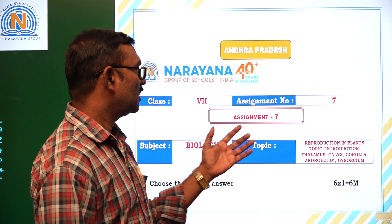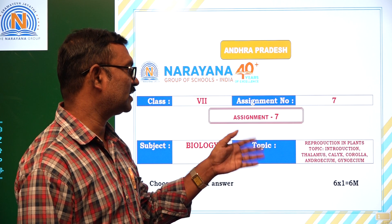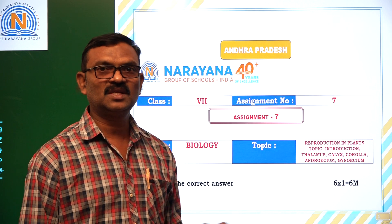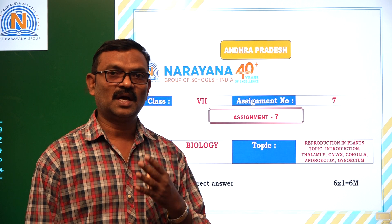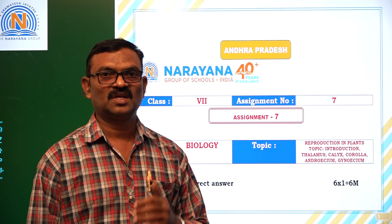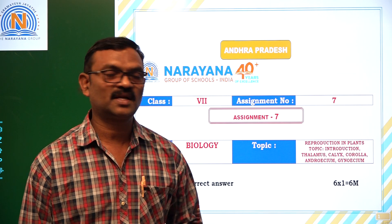The topics are Introduction, Thalamus, Calyx, Corolla, Androecium, and Gynoecium. This assignment consists of 6 choose the correct answers and 2 short answer questions. Let us see what are the questions and their answers.